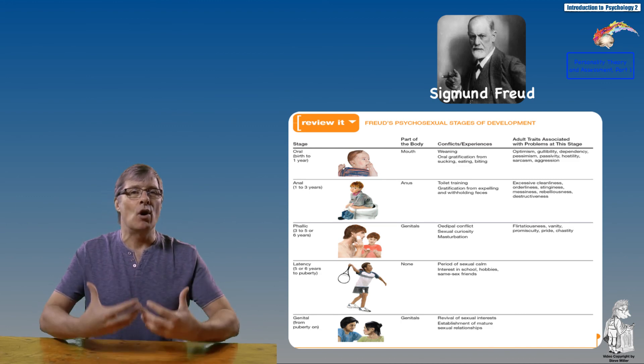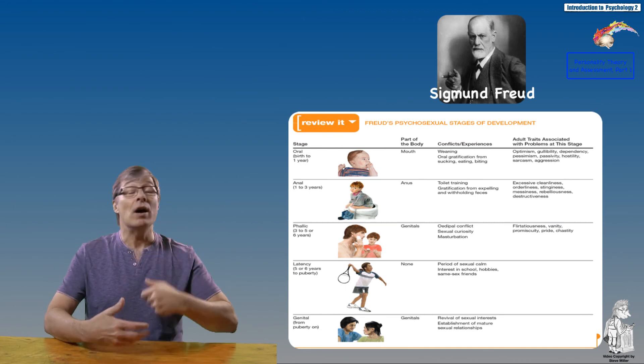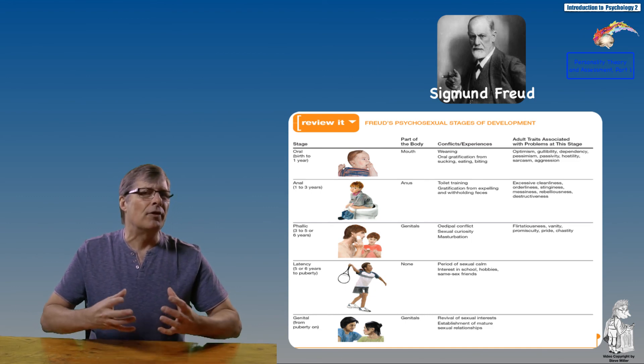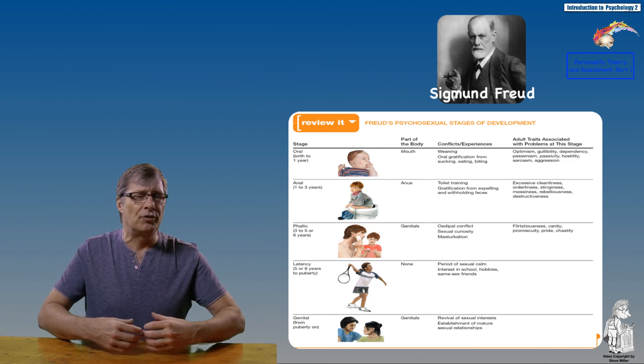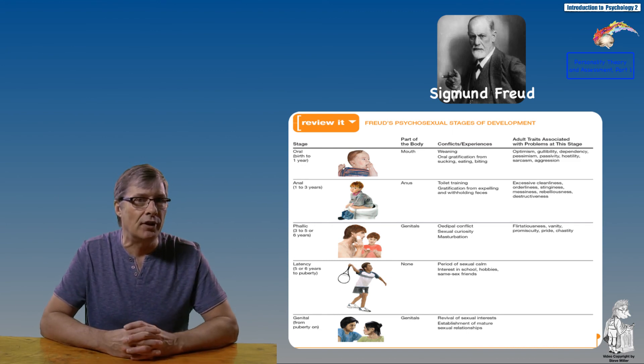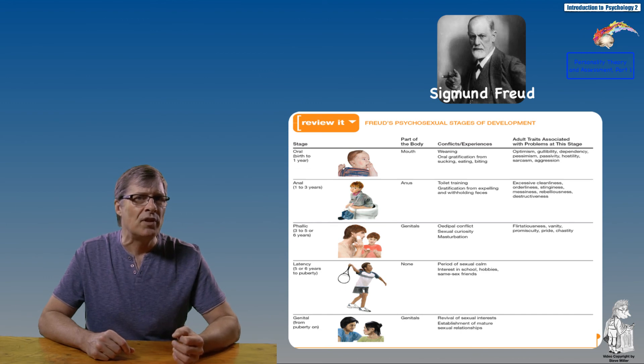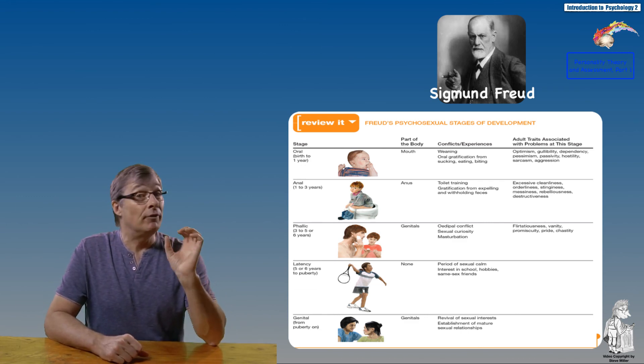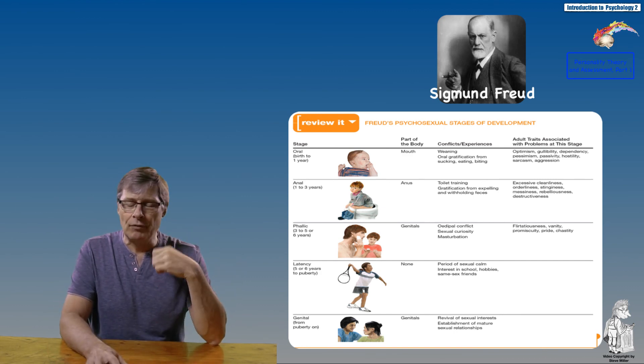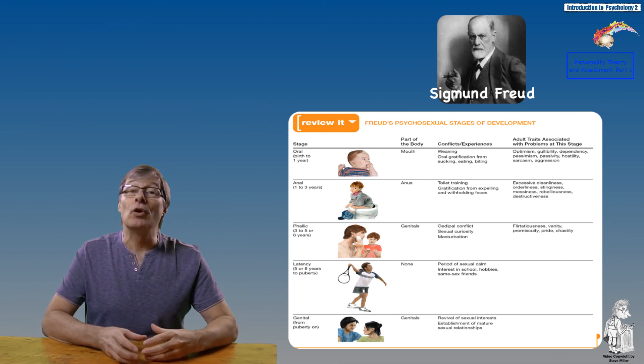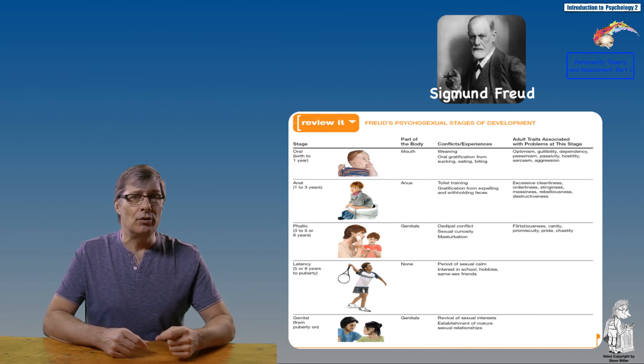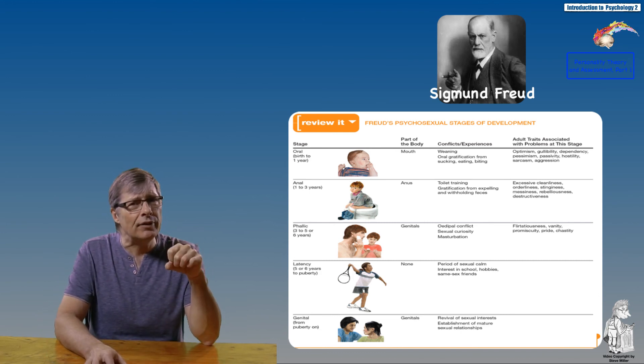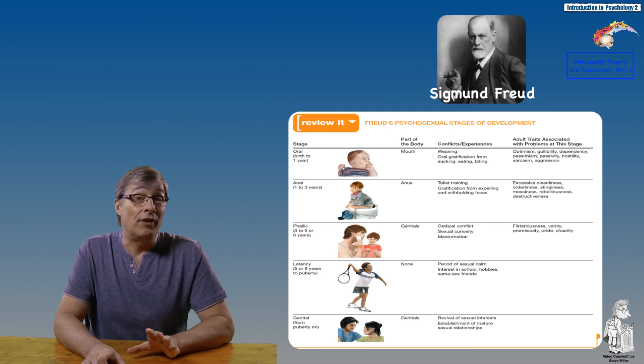Freud introduced another component: psychosexual stages. A lot of researchers that followed Freud didn't really subscribe to this section of his personality theory. Here he notes that a child could develop a fixation at a particular stage. According to Freud, fixations refer to arrested or slowed development that can happen at a psychosexual stage due to excessive gratification or frustration. Freud believed that personality is almost completely formed by age five or six.